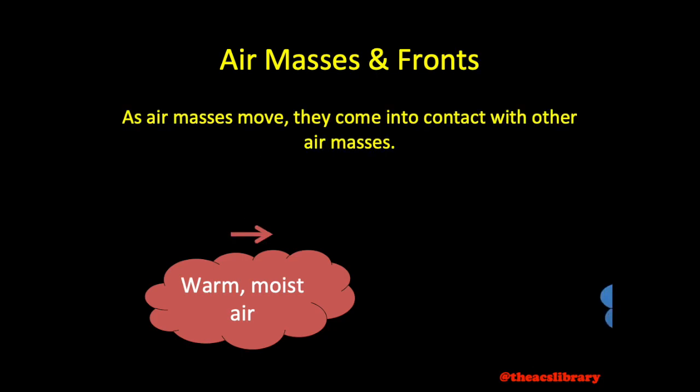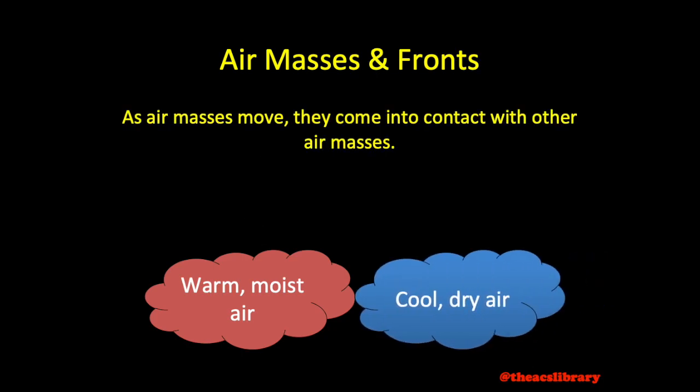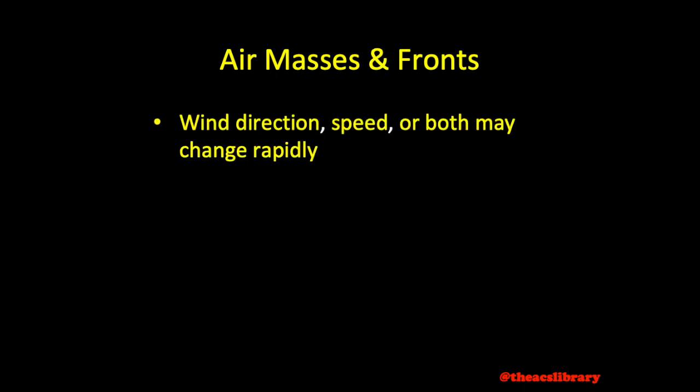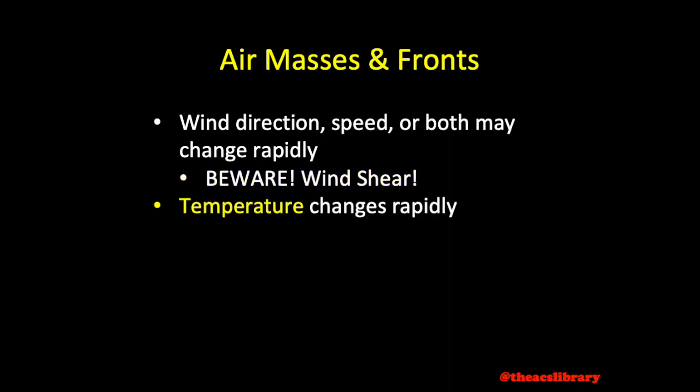As air masses move, they come into contact with other air masses. The zone in between these two air masses is known as the frontal zone, or front for short. Wind direction, speed, or both may change very rapidly while flying in the vicinity of a frontal zone. Be aware of possible wind shear. Temperature is among the most easily recognizable changes when flying through a front. Flying through a front will always produce a faster and more pronounced change in temperature than a flight wholly within one air mass.